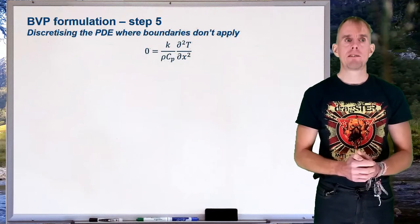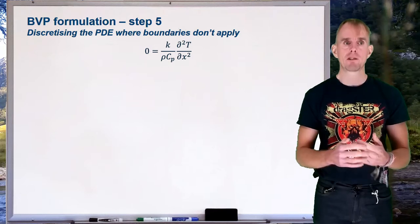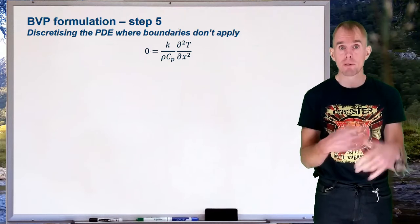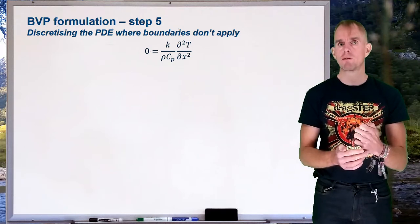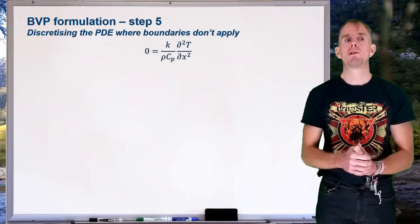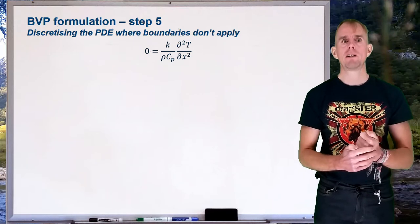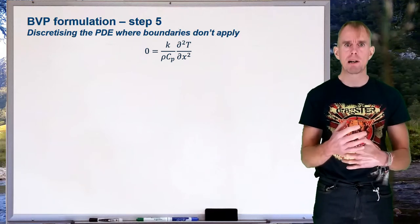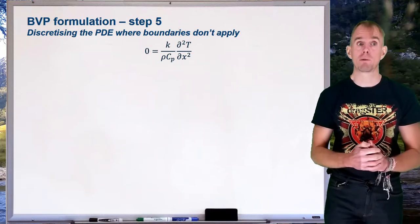Now let's discretize our partial differential equation. We'll start at a point far from boundaries and choose central differencing for its second-order accuracy. The first challenge is that our transport equation contains a second-order derivative rather than a first-order one, so we need to figure out how to write a second-order derivative in differencing terms.